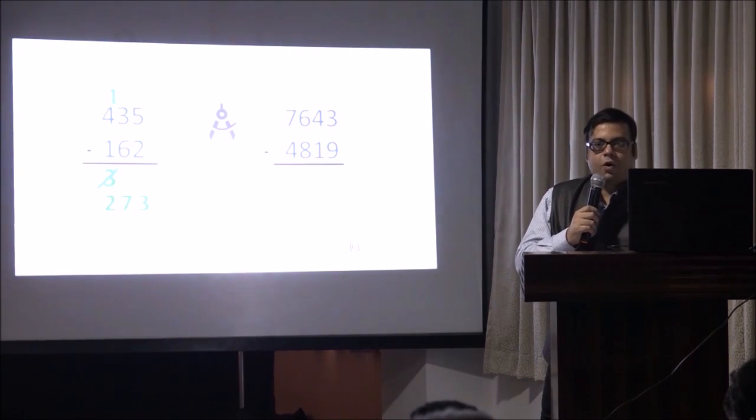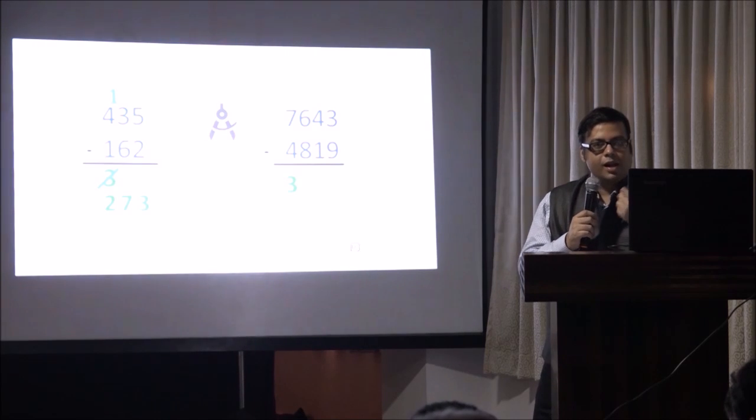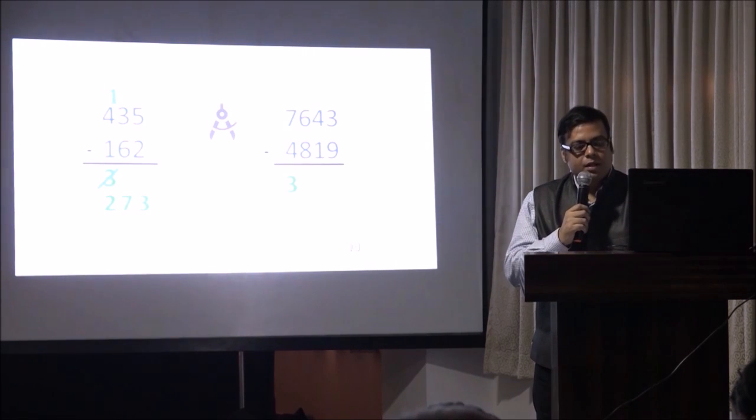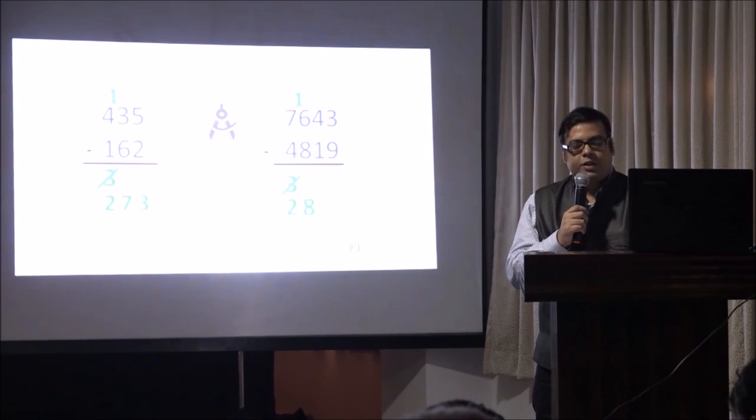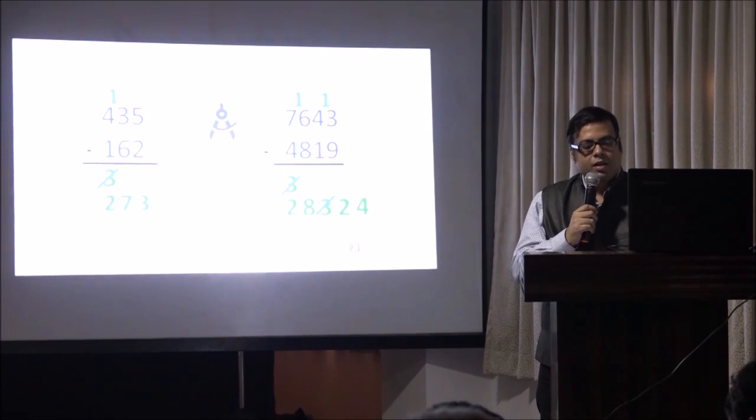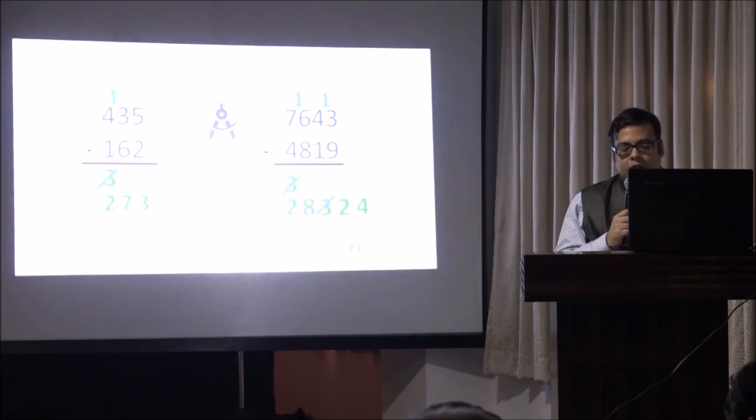Let's do the next one. 7 take away 4 is 3. And then what do you have? 3 becomes 2. 16 minus 8 is 8. 4 take away 1 is 3. And now what happens? 3 becomes 2 again. 13 minus 9 is 4. So that's your answer, 2824.